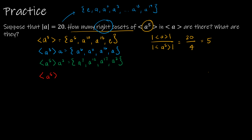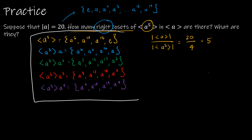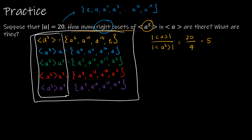Multiplying by A to the 4th gives {A⁹, A¹⁴, A¹⁹, A⁴}. That gives us five cosets total, and as we can see, they partition all 20 elements of the original cyclic group generated by A — confirming the result.